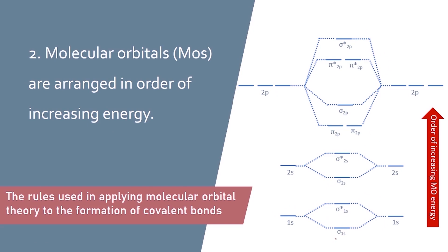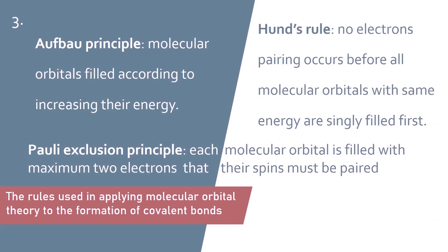The molecular orbital energy sequence from lowest to highest is: sigma 1s, sigma star 1s, sigma 2s, sigma star 2s, 2pi molecular orbitals, then sigma 2p bonding, followed by the higher-energy 2pi 2p star, and sigma star 2p.